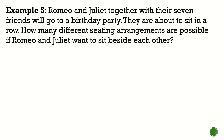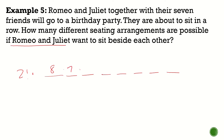Romeo and Juliet together with their seven friends will go to a birthday party. They are about to sit in a row. How many different seating arrangements are possible if Romeo and Juliet want to sit beside each other? We consider Romeo and Juliet as one unit, so together with the seven friends, we have eight entities — giving us 8!. Romeo and Juliet can also switch positions (Romeo-Juliet or Juliet-Romeo), so that's 2!. The answer is 2! × 8! = 80,640.